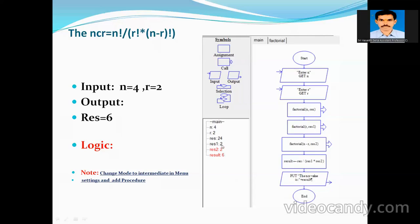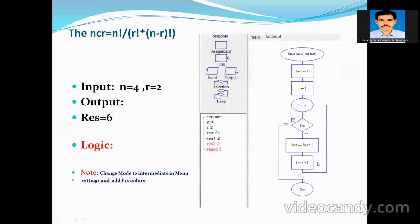The res1 variable value is 2. Similarly, I am calling the factorial function again, passing the argument n minus r, so 4 minus 2 equals 2. The result is stored in the result variable res2. After finding all three factorials, I compute n factorial divided by r factorial into n minus r factorial and store the final result.